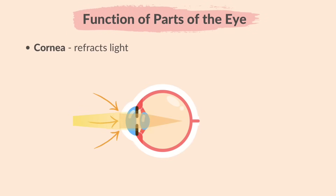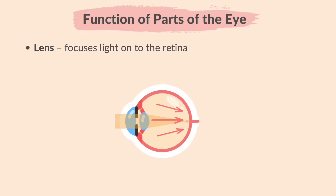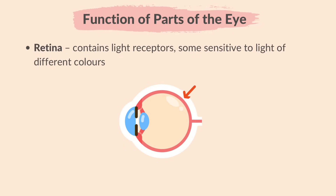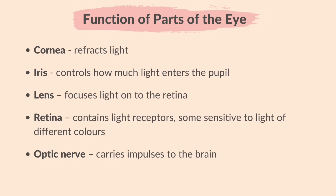Let's learn the function of each part of the eye. The cornea refracts or bends light when it enters the eye. The iris controls how much light enters the pupil. The lens focuses light onto the retina. The retina contains light receptors, some sensitive to light of different colors. The optic nerve carries impulses to the brain.